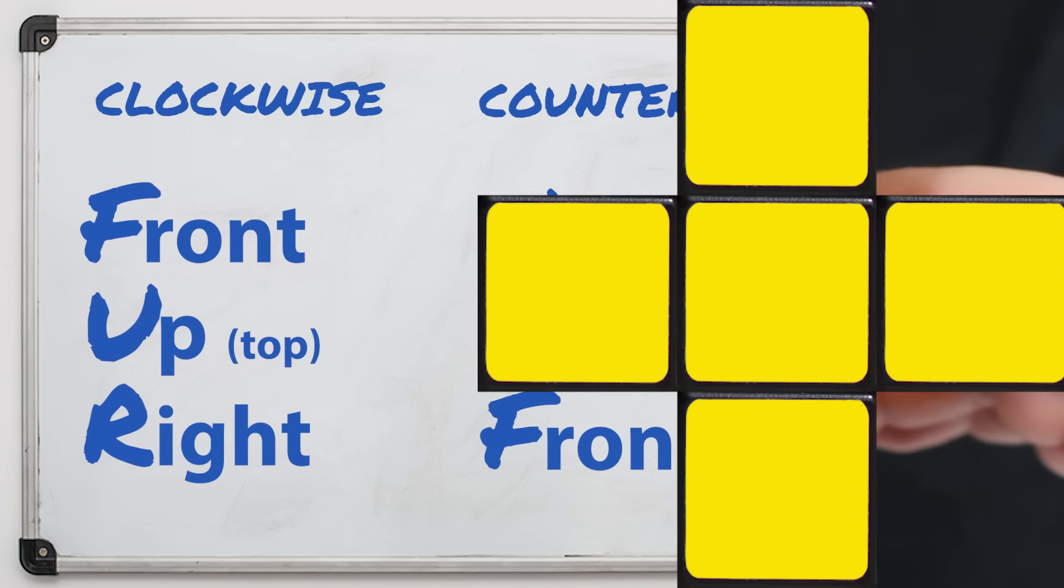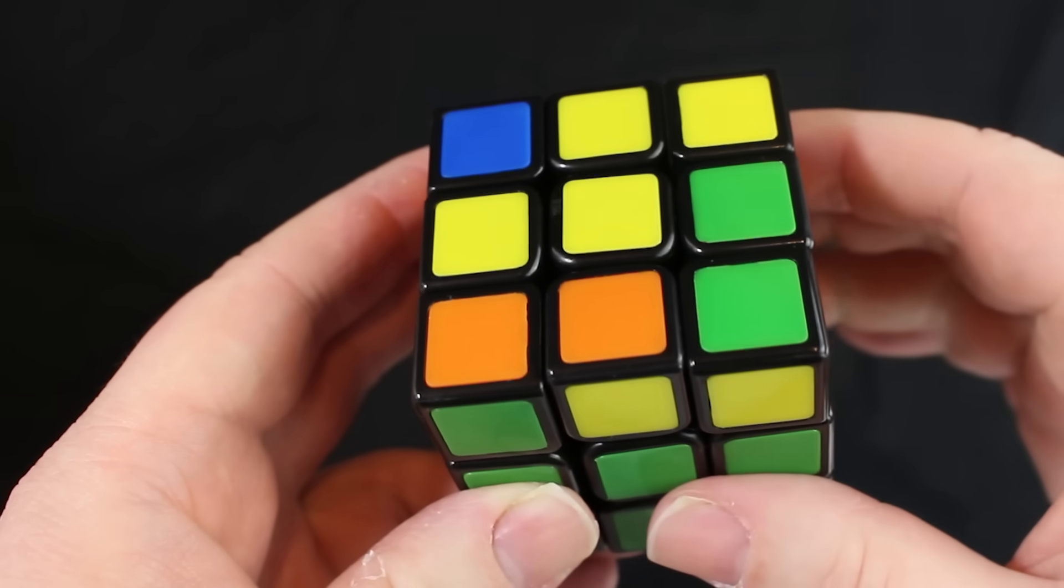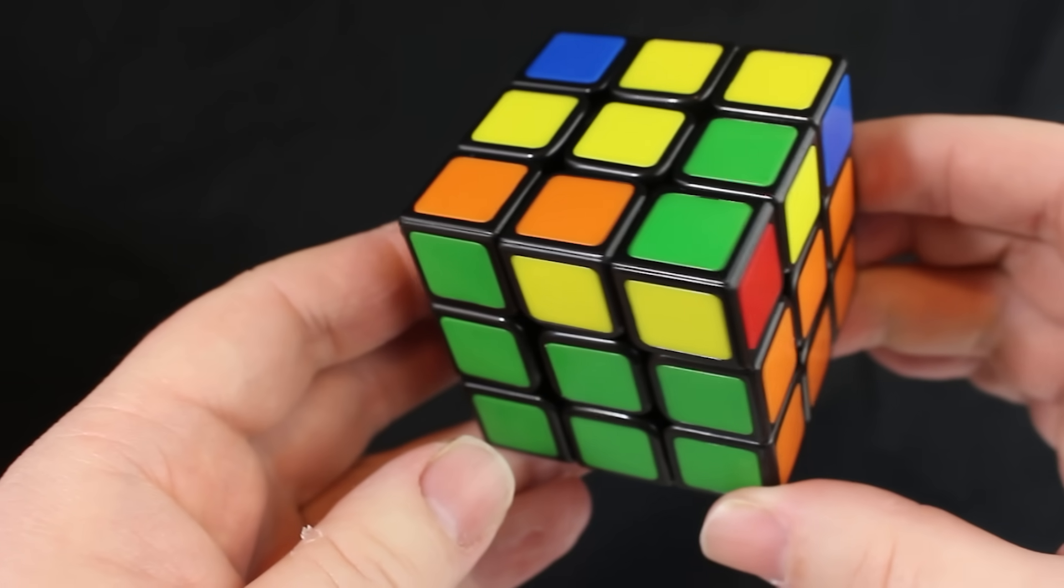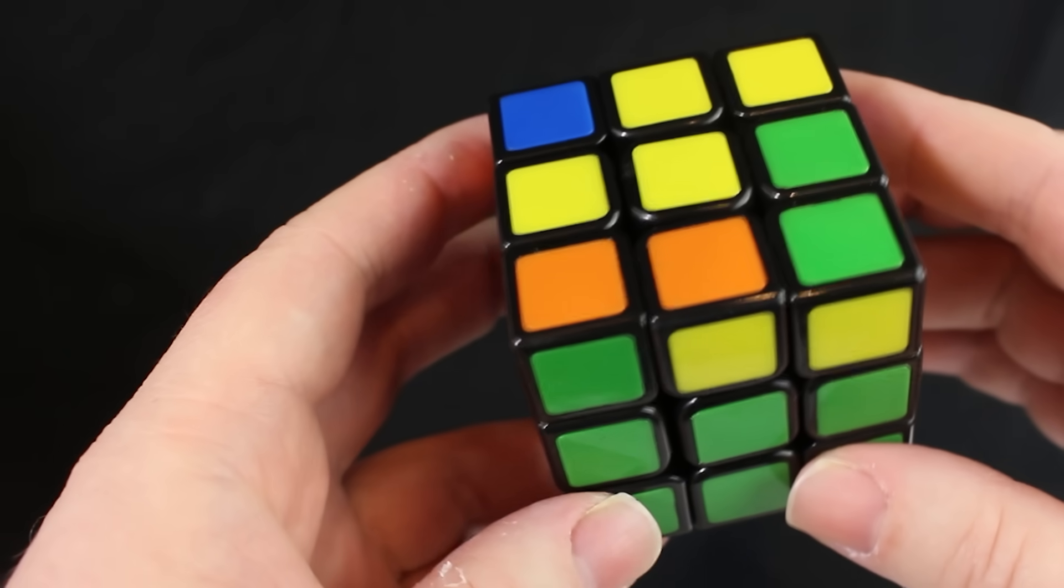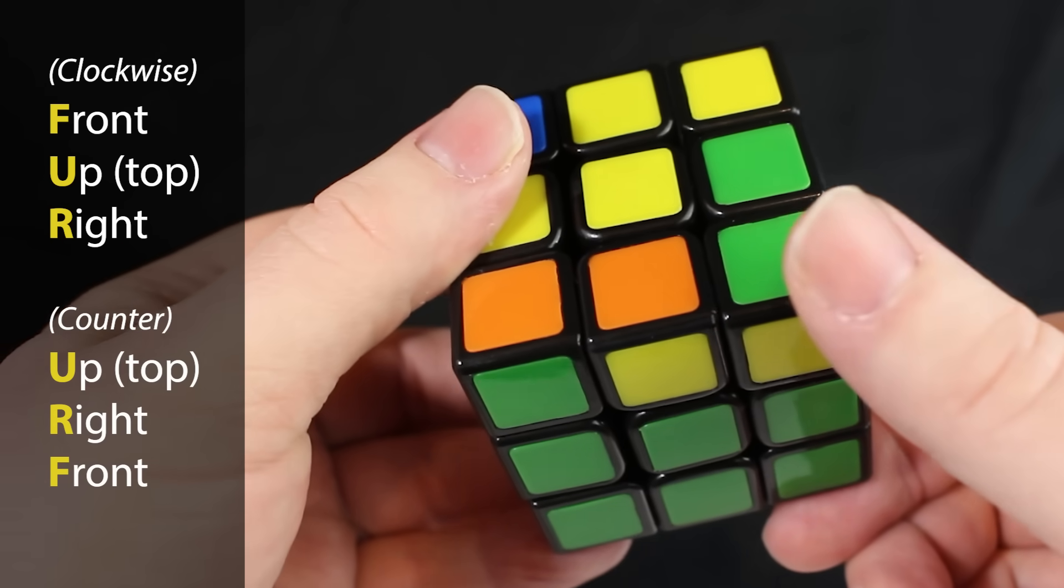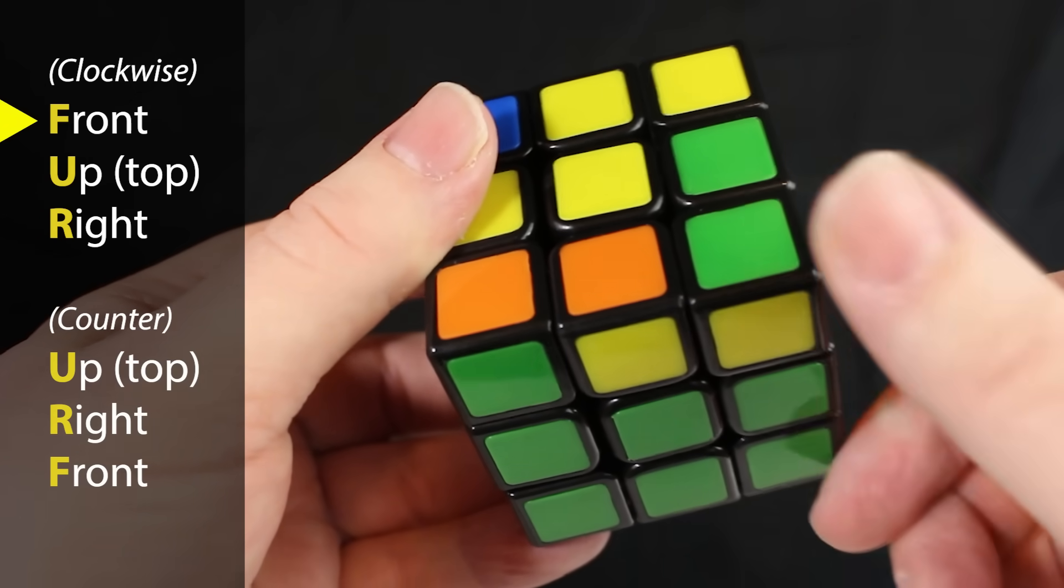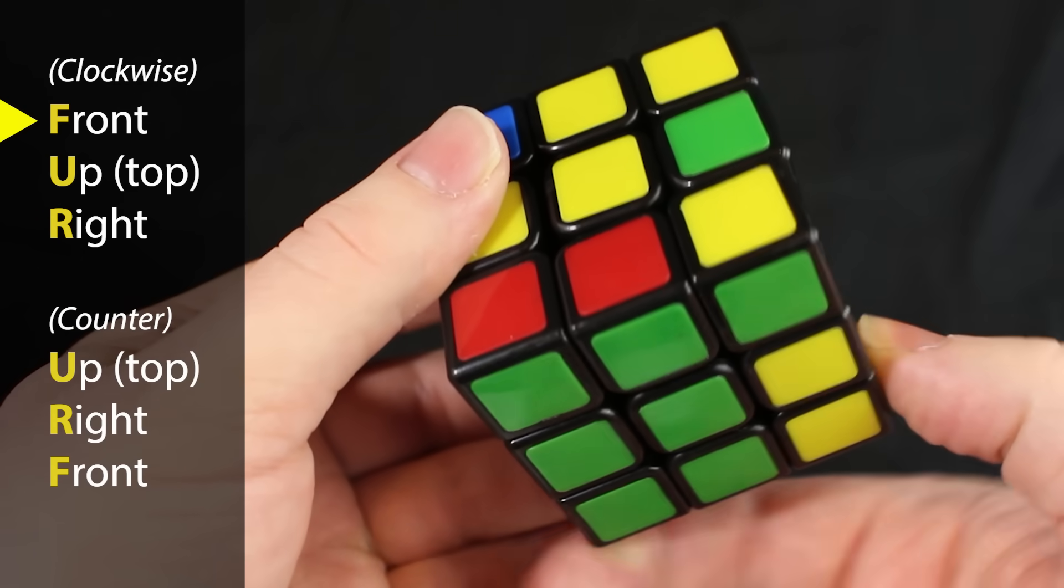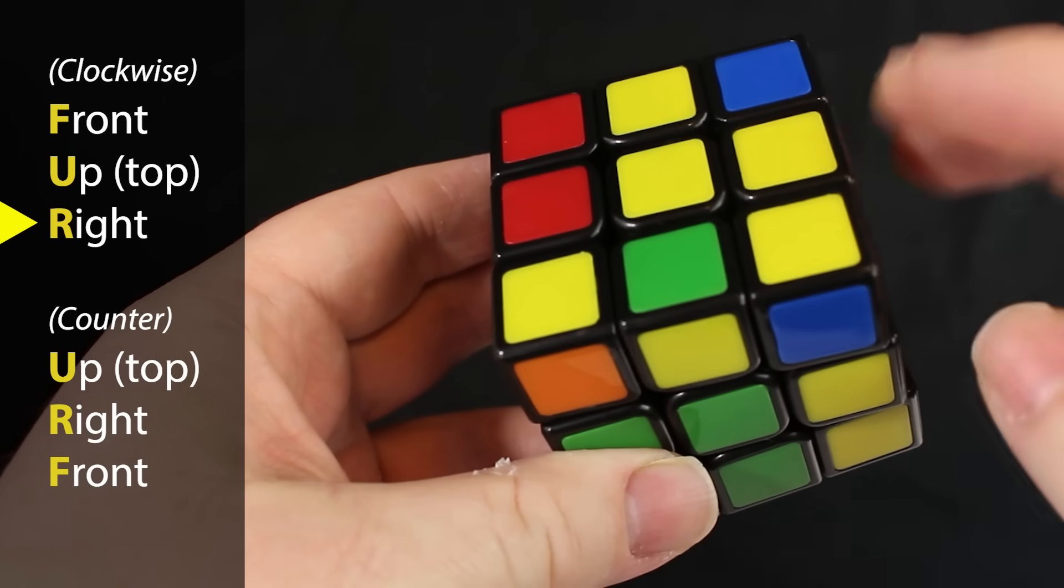So let's make the yellow plus. The goal is to get a yellow plus right here on the yellow side. We're going to have to hold the cube so the yellow side is pointing up just like this. And then we're going to do those moves. We're going to do the first three clockwise moves, which were front, then the up of the cube or the top, then the right.